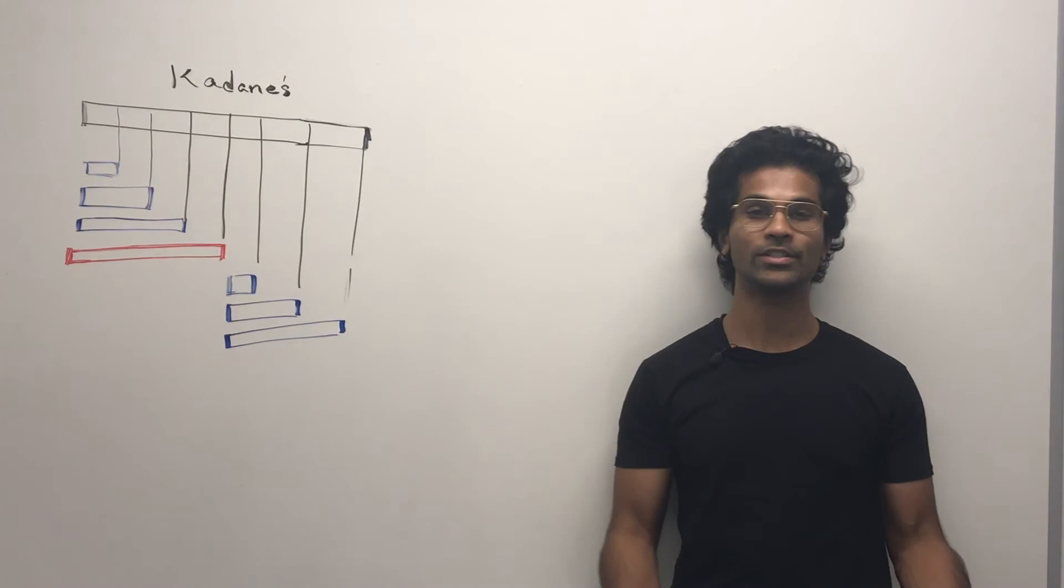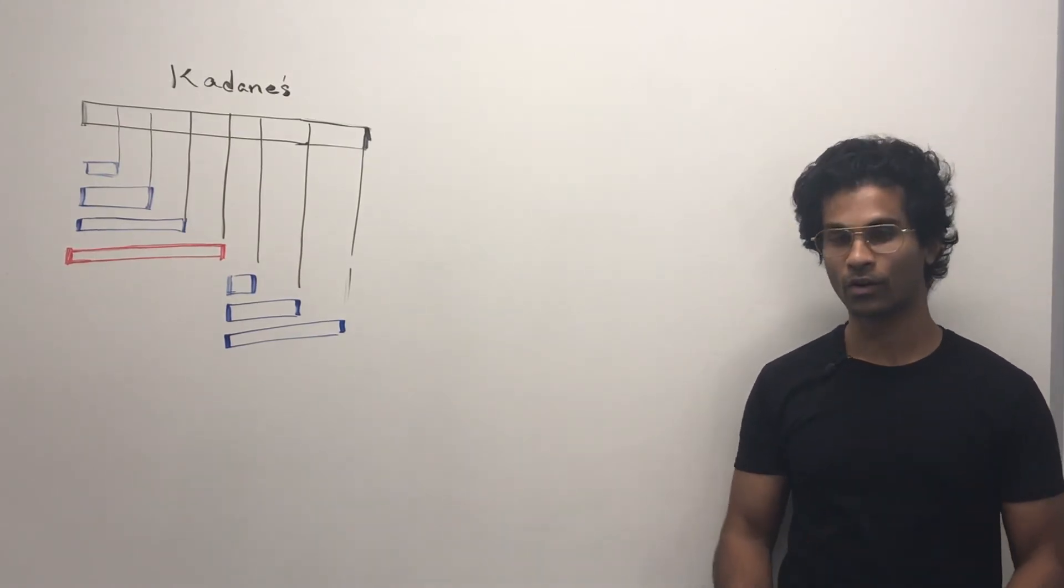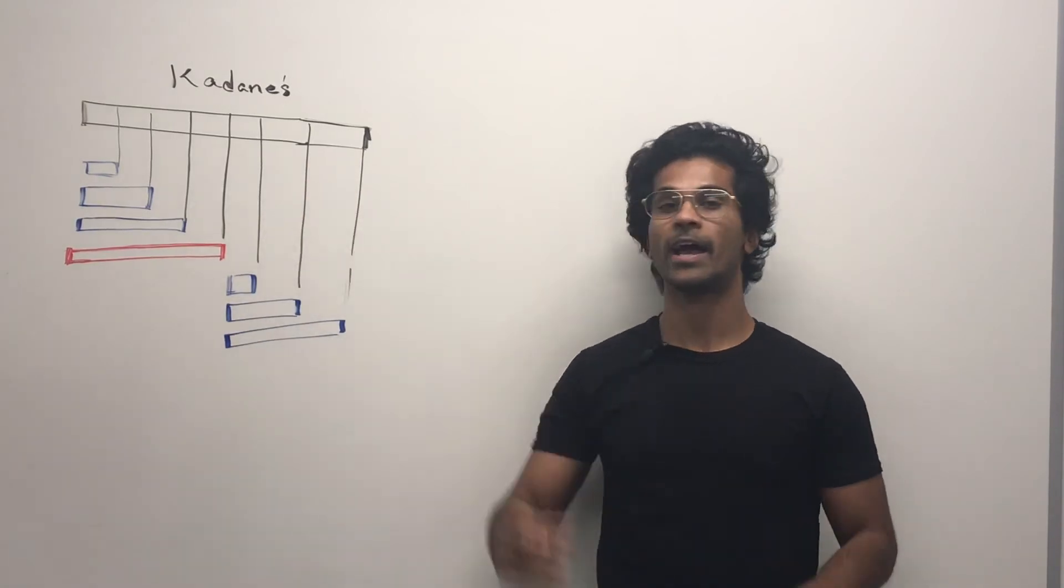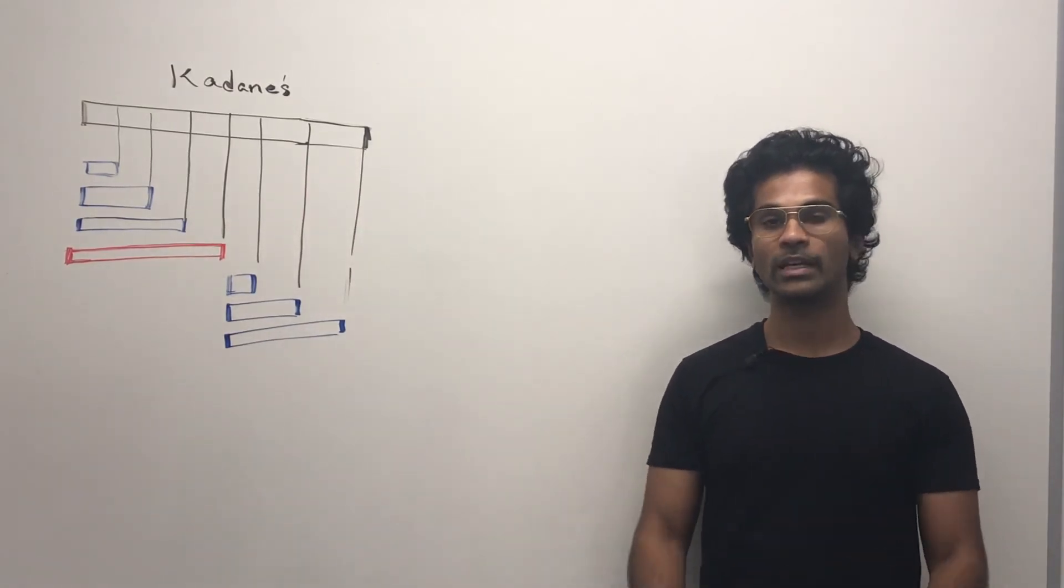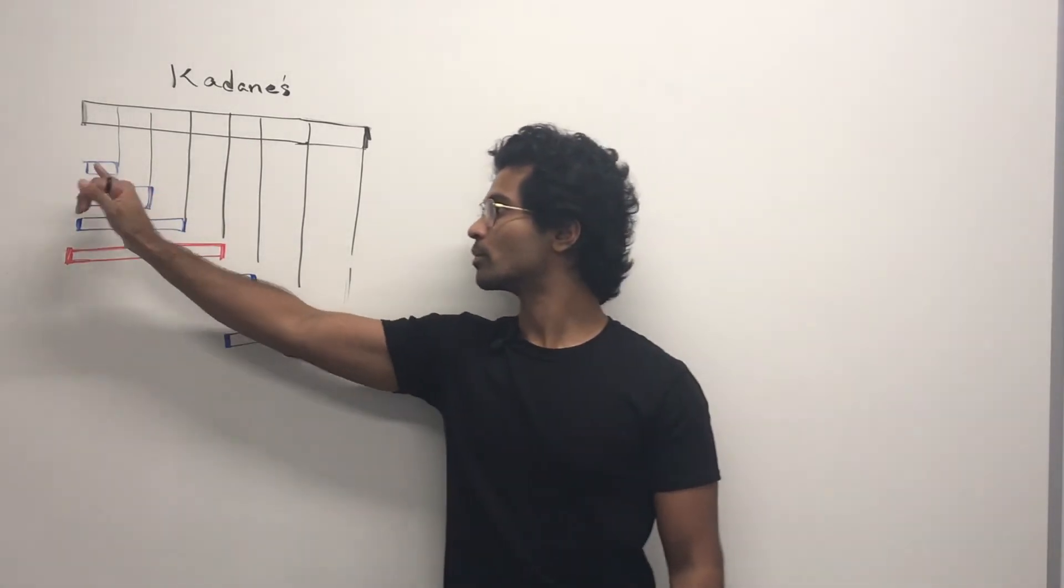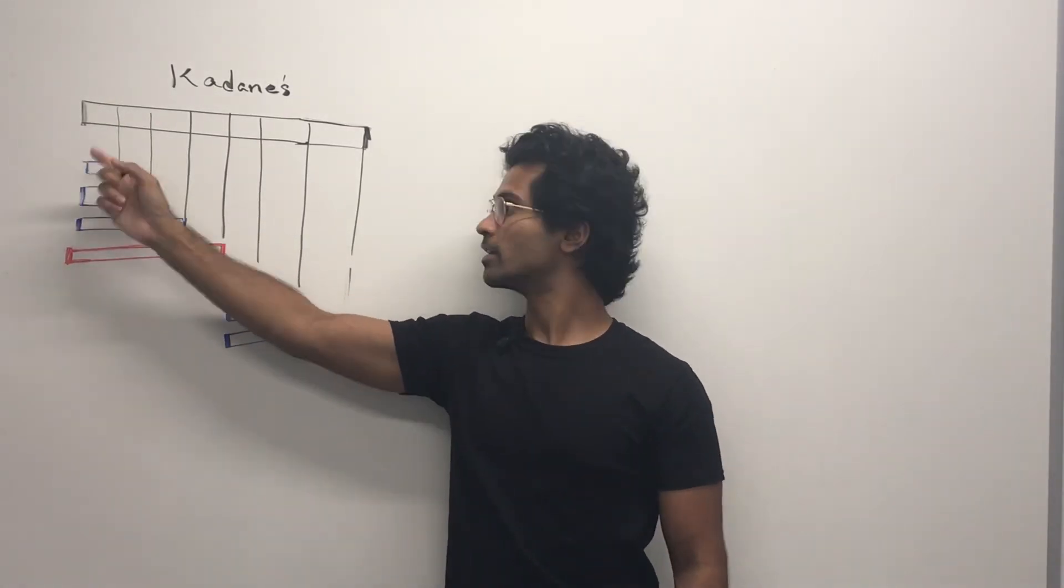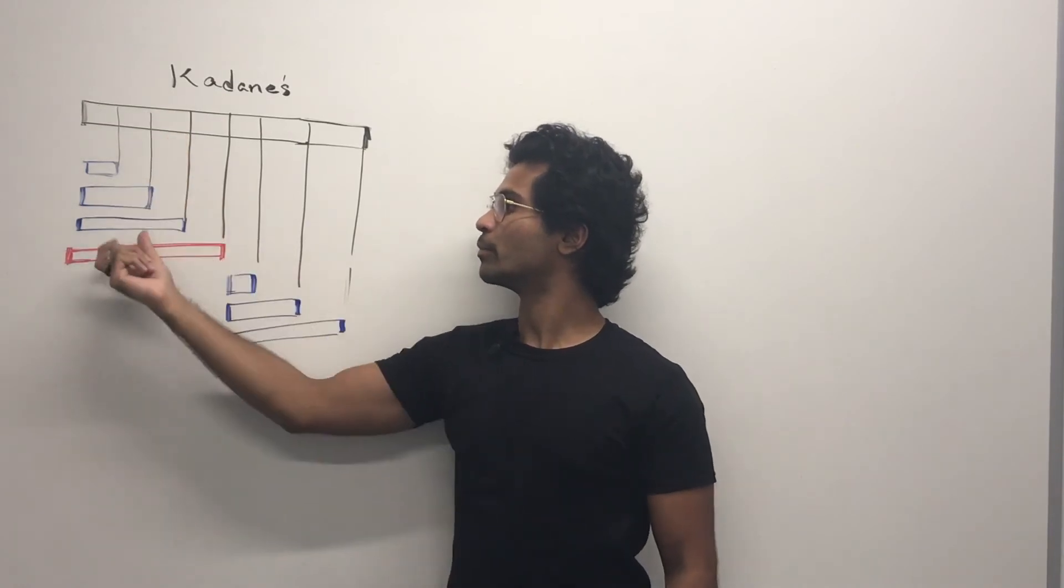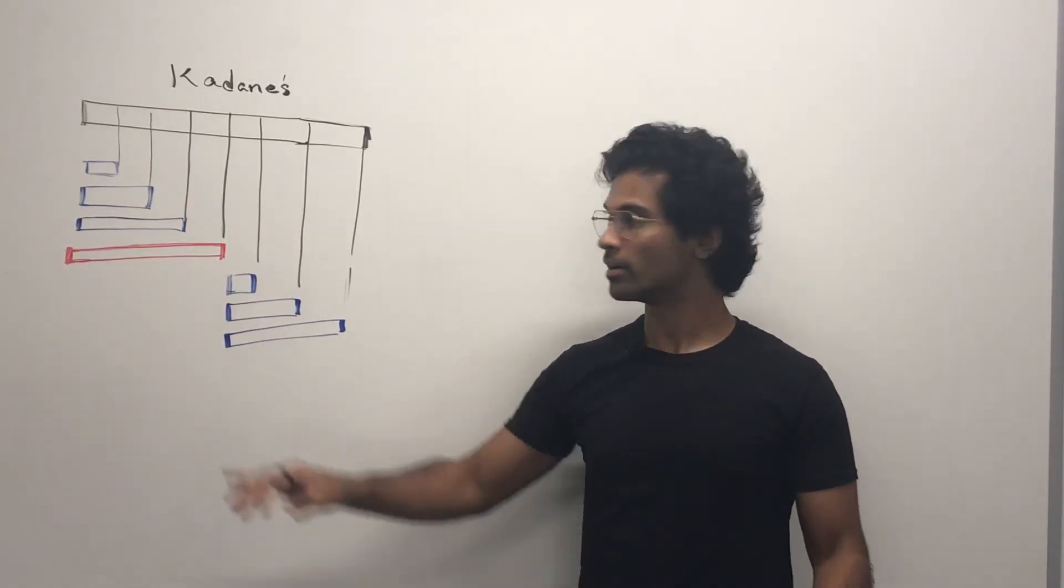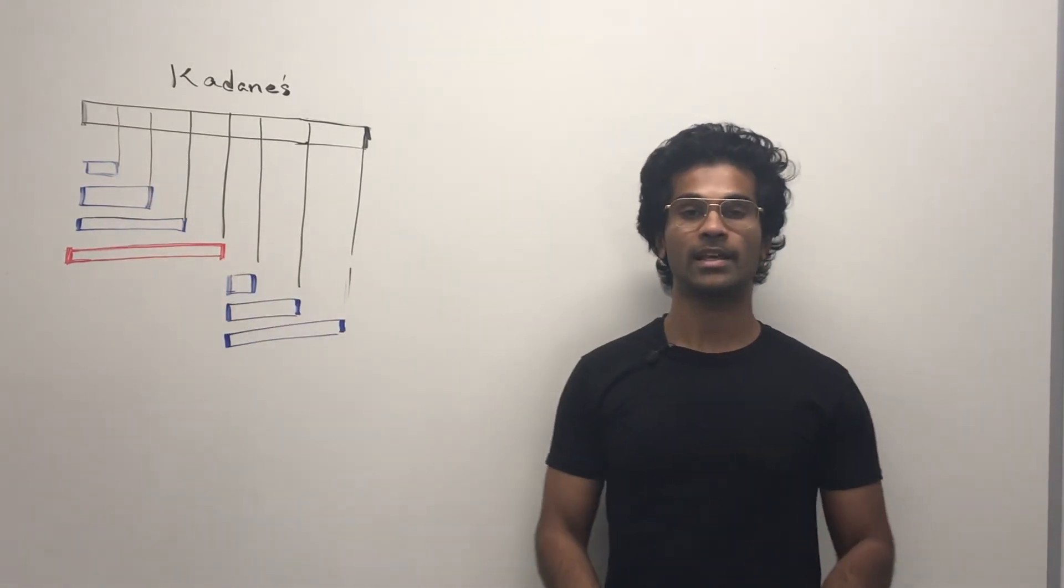Kadane's algorithm is actually easier to understand than the divide and conquer approach. So what we do is we take our original array, and we begin a for loop, and we keep a cumulative sum of all the integers that we're visiting. So first, we take this, which is the first integer, then we add the second one, and then we keep adding, and each of these blue bars, or red bars, or just a bar, represents a cumulative sum.